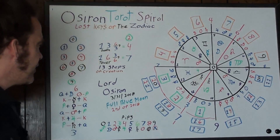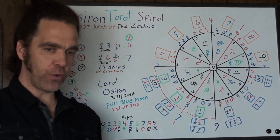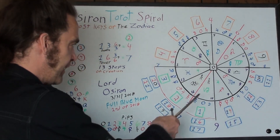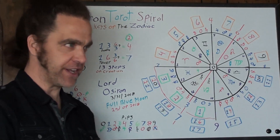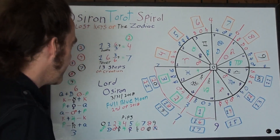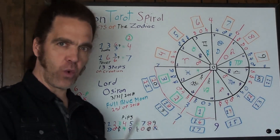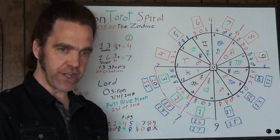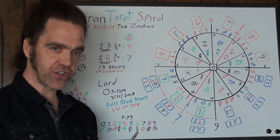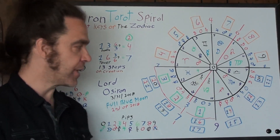The Osseron Tarot Spiral also has a code that's produced with it, which I explain in greater detail in parts two and three. The code is: 1, 3, 6, 1, 6, 3, 1, 9, 9 — then 1, 3, 6, 1, 6, 3, 1, 9, 9 — and it ends with 1, 3, 6.